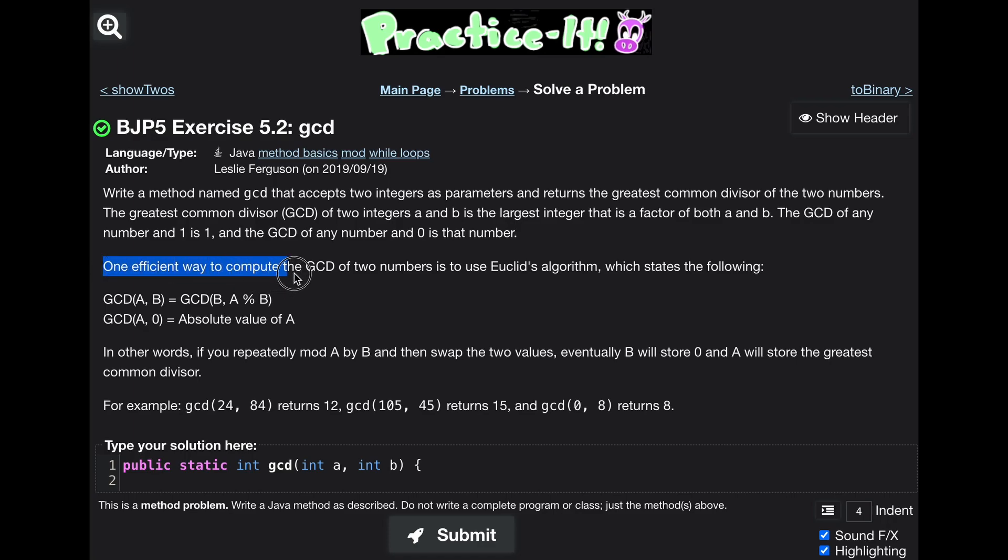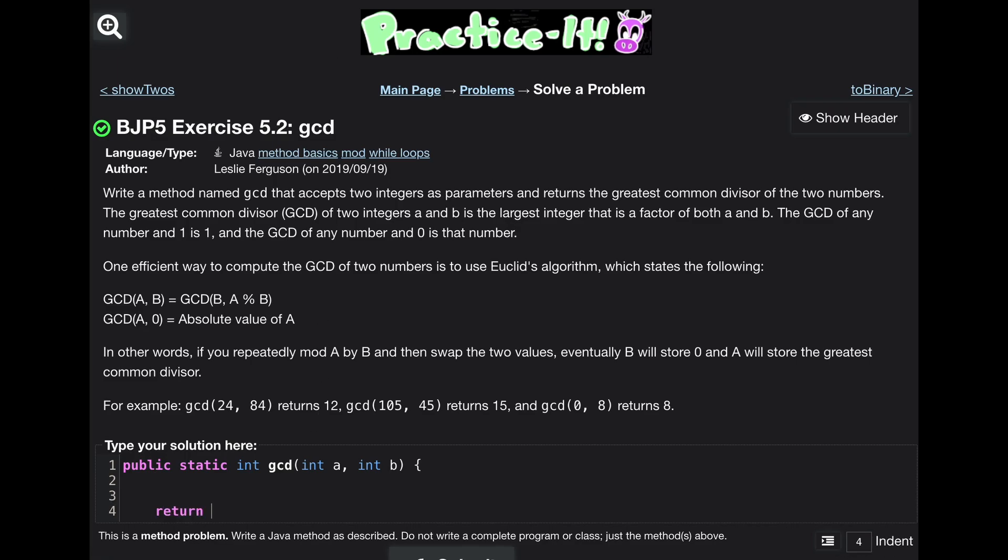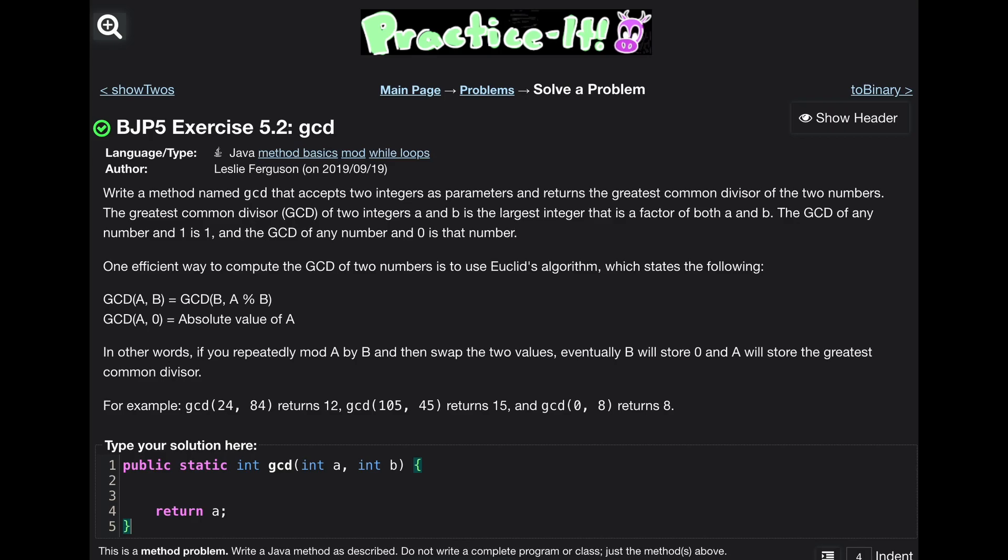The instructions say one efficient way to compute the GCD of two numbers is to use the algorithm that we are given here. In kind of English, it says if we repeatedly mod a by b, then swap the two values, eventually b will store zero and a will store the greatest common divisor. So if a is going to store the greatest common divisor and that's what we want to return, we know we are going to have to return a at the end of this method.